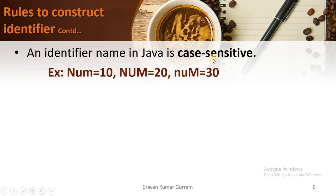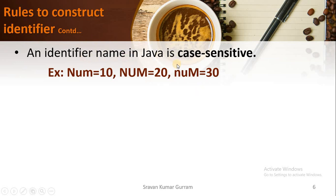An identifier name in Java is case sensitive. Java treats lowercase and uppercase as different. For example, 'num' with lowercase N, 'NUM' with all capitals, and 'nuM' with only M capitalized are all completely different identifiers. That is the meaning of identifiers being case sensitive.